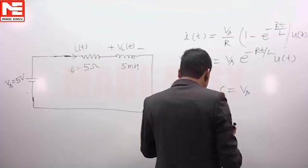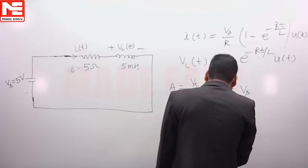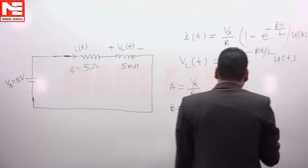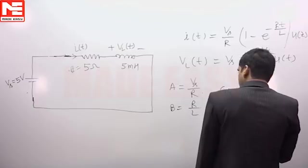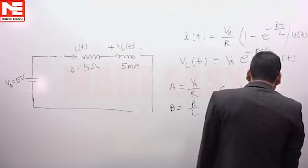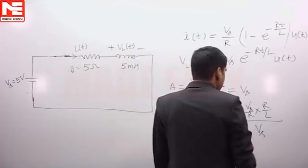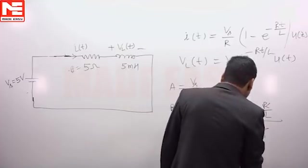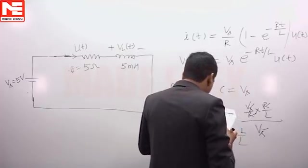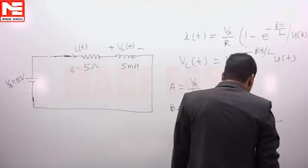We have to calculate the value of AB upon C. AB is Vs by R into R by L upon C that is Vs. So this value is R. R cancels, Vs cancels, 1 upon L, and L value is given in the question as 5 millihenry.